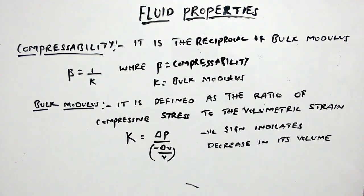In this video we are going to discuss one more important fluid property, that is compressibility. Now compressibility is defined as the reciprocal of bulk modulus, that is β = 1/K, where β is the compressibility and K is the bulk modulus.